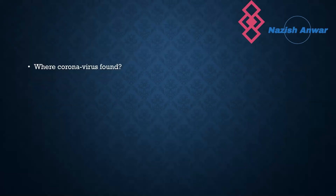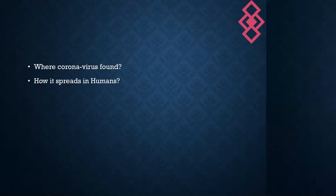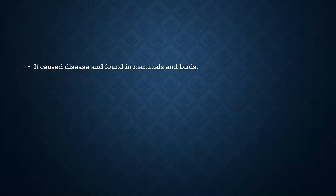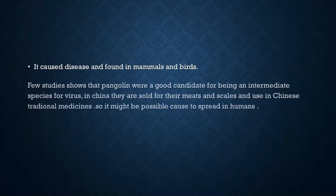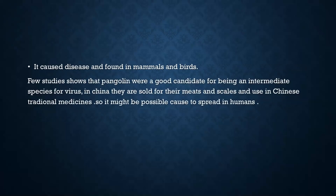Some basic questions: where is coronavirus found, and how does it spread in humans? The answer to question one: it causes disease and is found in mammals and birds. Few studies show that pangolins were a good candidate for being an intermediate species for the virus. In China, they are sold for their meat and scales and used in Chinese traditional medicine, so that might be a possible cause of spread to humans. In humans, it may also spread by bats.